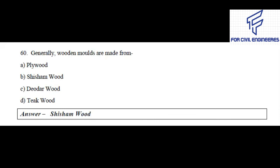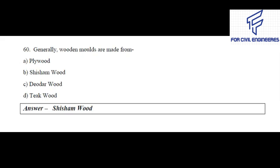Question number 60: Generally, wooden moulds are made from — Plywood, Shisham, Devdhar, or Teak? The right answer is Shisham. So this is all about the part 2 video. If you like my video, please subscribe my channel and press the bell icon. And don't forget to like, comment, and share.